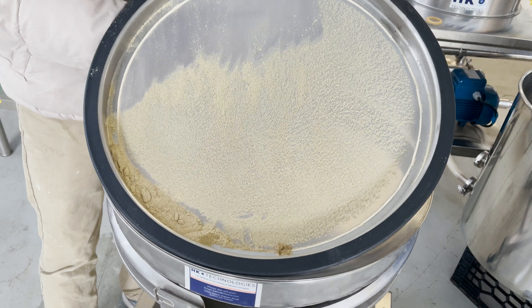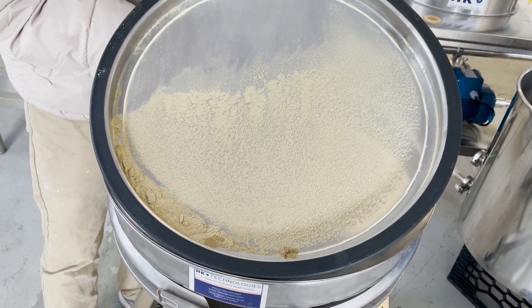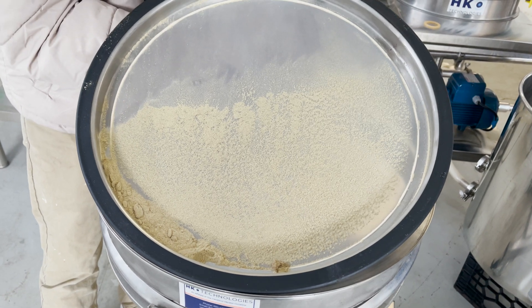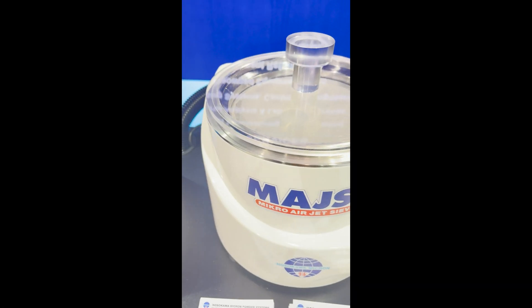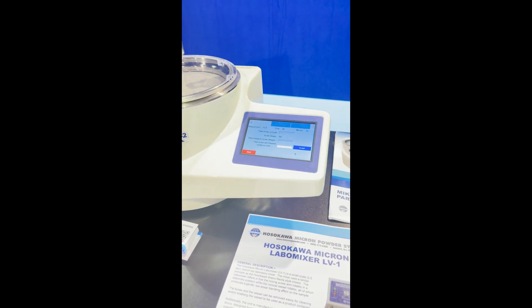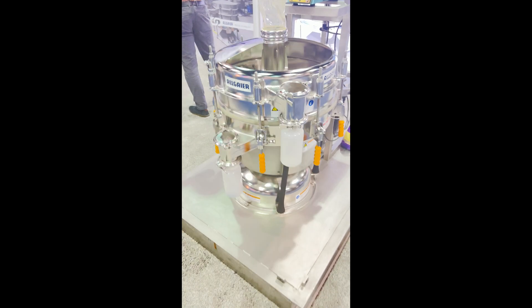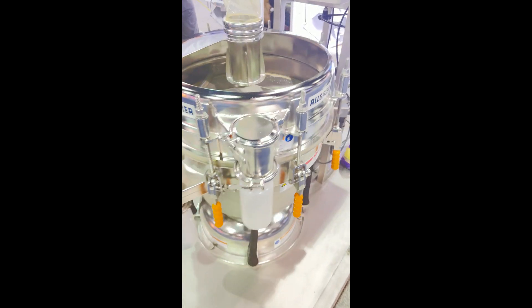By now you understand the challenges sifting poses. However, innovative technologies can be used to overcome these challenges. Take a look at these sieves that use a circulating jet of air to break up agglomerates and unclog screens. Brilliant! These machines address many of the disadvantages of normal vibrating screens.